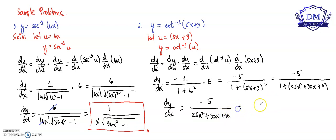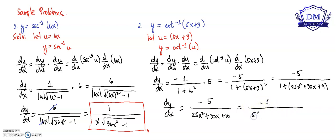This is 10 because of 9 plus 1. We can still simplify since 5, 25, 30, and 10 are all divisible by 5. So we have negative 1 all over 5x squared plus 6x plus 2. This is our dy over dx.